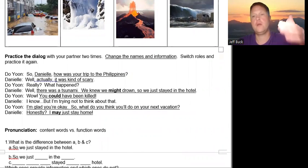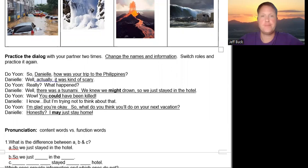Okay? And now the dialogue. So look and listen and repeat and try to use some emotion and body language. So Danielle, how was your trip to the Philippines? Well, actually, it was kind of scary. Really? What happened? Well, there was a tsunami. We knew we might drown, so we just stayed in the hotel. Wow, you could have been killed. I know, but I'm trying not to think about that. I'm glad you're okay. So what do you think you'll do on your next vacation? Honestly, I might just stay home.